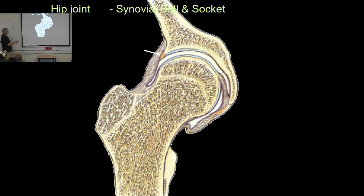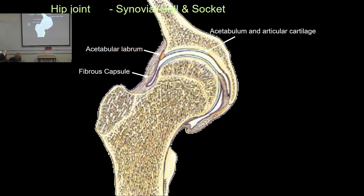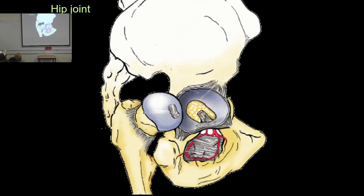The hip joint is a synovial ball-and-socket joint with a bony cup called the acetabulum and the head of femur sitting in that cup. There is also an acetabular labrum — a cartilaginous extension that deepens the cup and holds the femur tightly in the joint. The ligament of the head of the femur contains a blood vessel, which is its main importance — it provides nutrition to the head of femur through that blood vessel, though it doesn't add much strength to the joint.